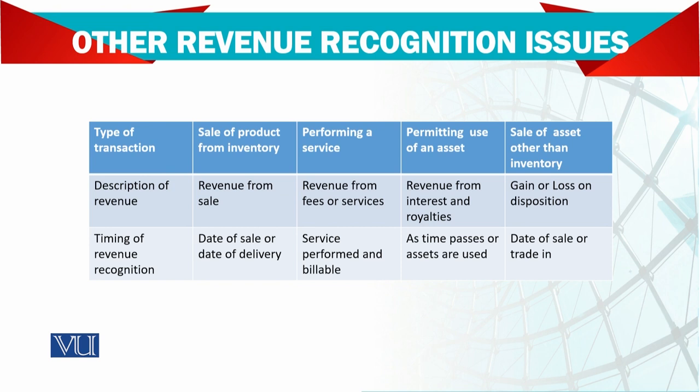Types of transactions, description of revenue, and timing of revenue recognized: Sale of product from inventory - revenue from sales - recorded at date of sales or date of delivery. Very clearly, if you are selling goods, then it should be the date of delivery.